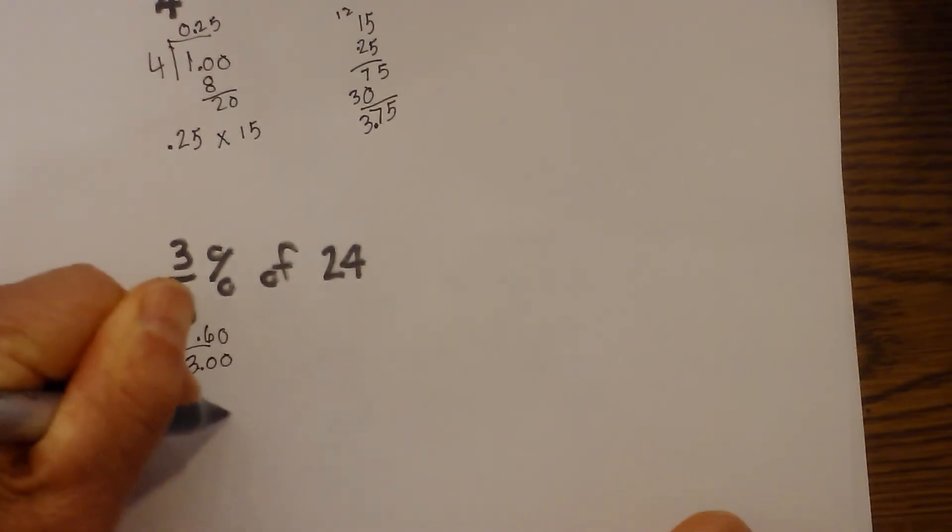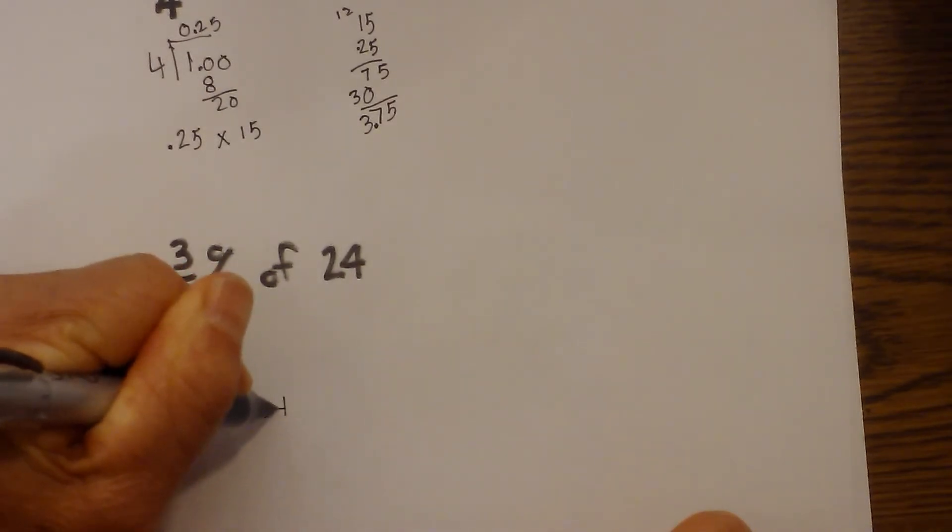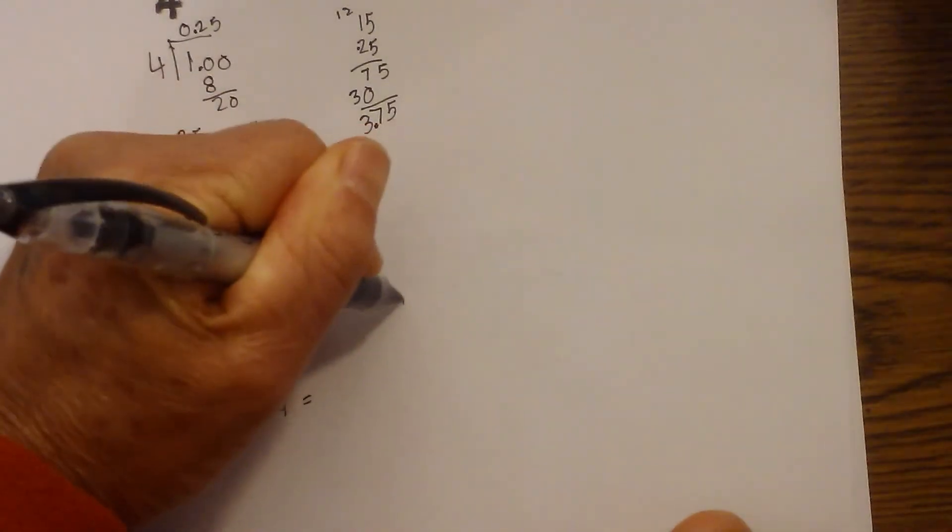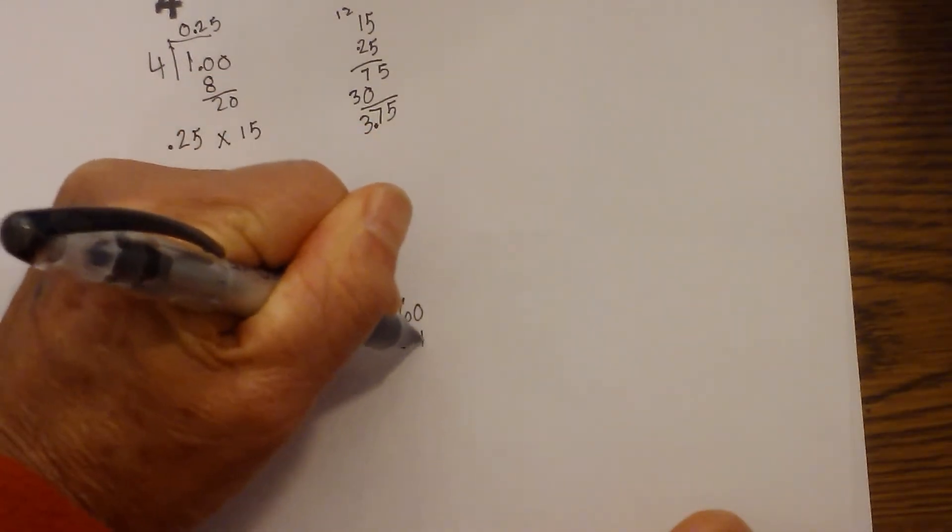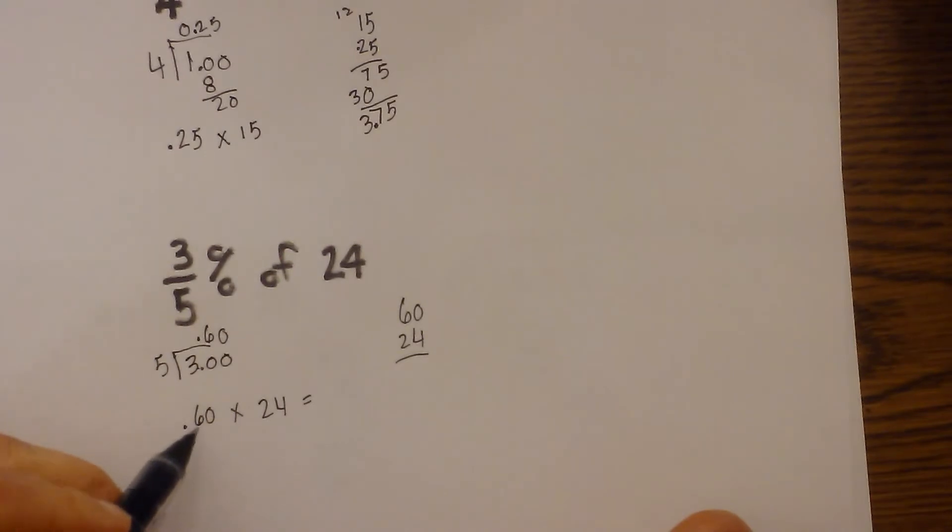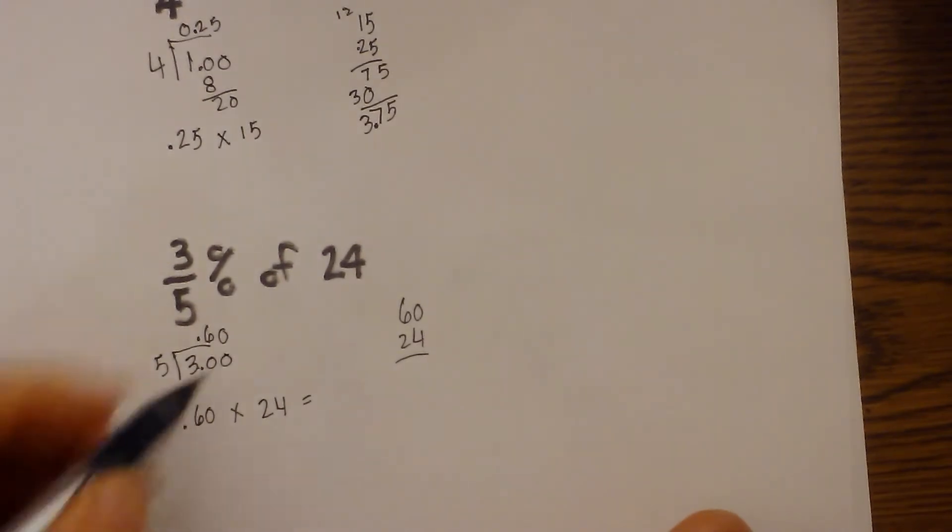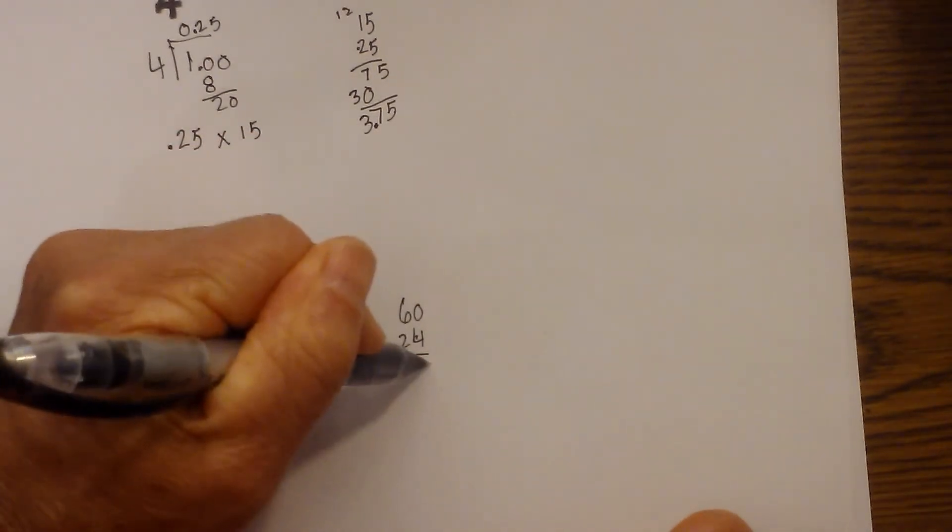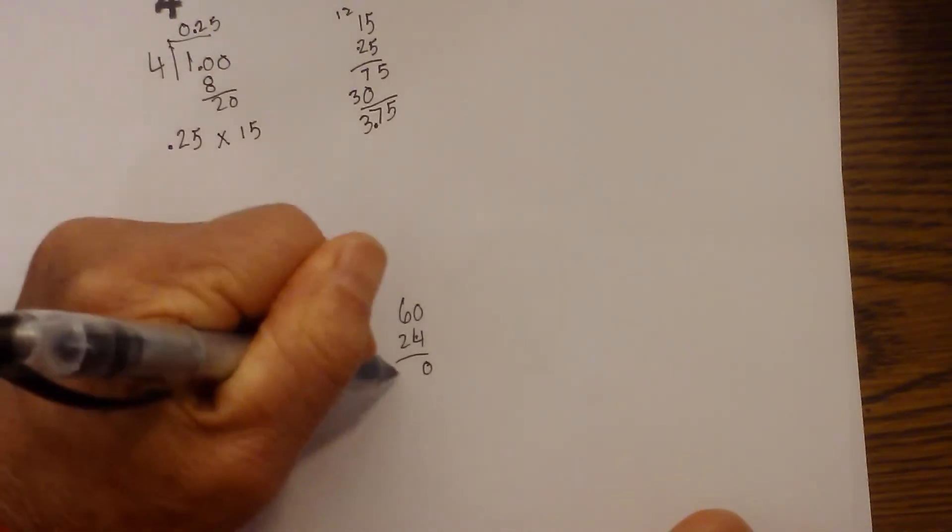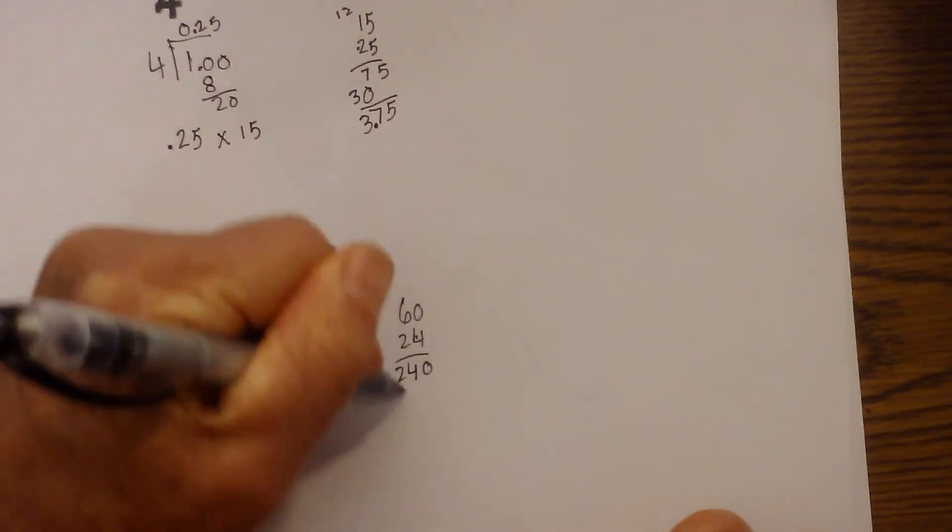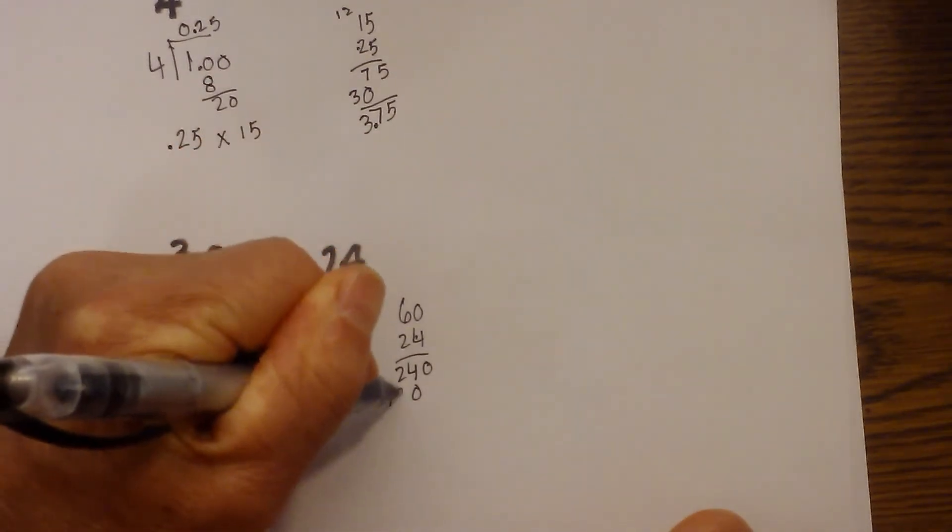So I have 0.6 times 24 is equal to, I'm going to move the 6 up here. Remember to move the decimal later after I multiply. 4 times 6 is 24, then we have 0 and 12.